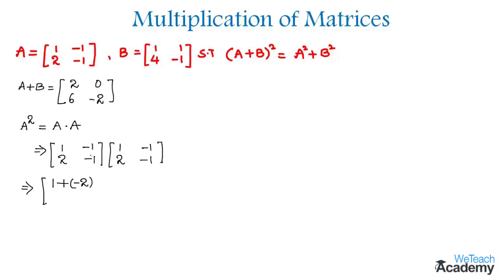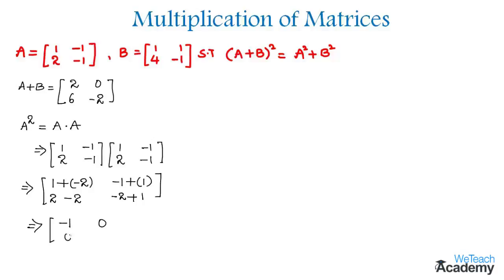By multiplying the first row with the second column, we get two into one which is two, plus two into minus one which is minus two. Then two into minus one is minus two, plus minus one into minus one is plus one. Performing these operations, we get minus one, zero, zero, and minus one. So these are the values of A².